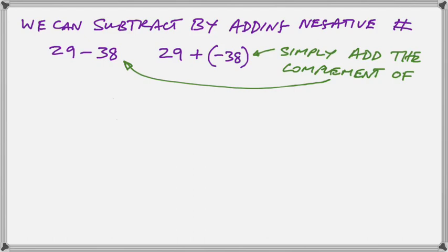Over on the left we have 29 minus 38, but we can also add 29 to minus 38 and get the same result. So now we are seeing the importance of using our negative numbers to perform addition.